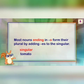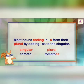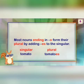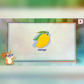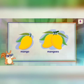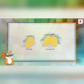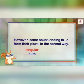Most nouns ending in O form their plural by adding ES. For nouns that end in O, we put ES. For example: tomato becomes tomatoes, and mango becomes mangoes. Like this, we form their plural.